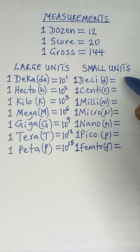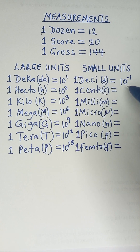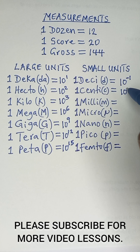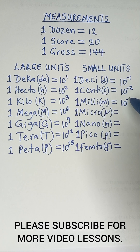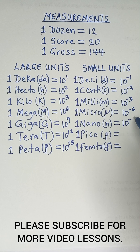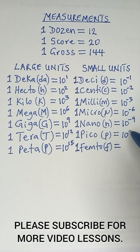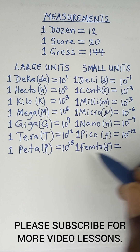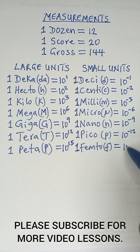For smaller units, 1 deca is 10 raised power minus 1, 1 centi is 10 raised power minus 2, 1 milli is 10 raised power minus 3, 1 micro is 10 raised power minus 6, 1 nano is 10 raised power minus 9, 1 pico is 10 raised power minus 12, and 1 femto is 10 raised power minus 15.